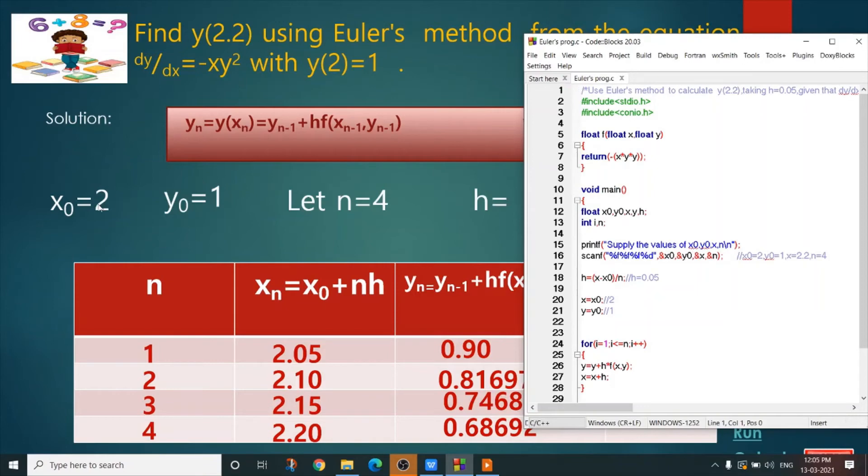What is x0? It is 2. What is y0? It is 1. What is x? It is 2.2 and what is n? n is total number of intervals. It is 4. First take this value from the user.